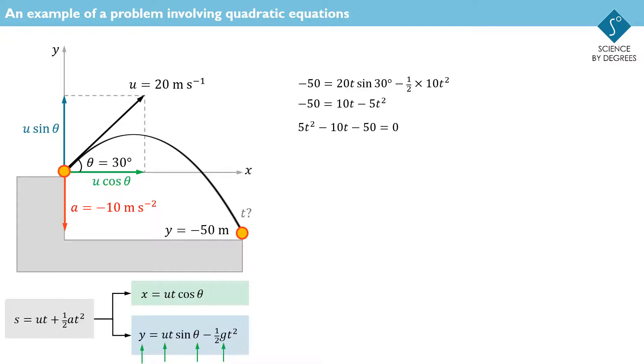We can collect all the terms on the same side, and then divide throughout by 5 to give us this quadratic equation to solve. It's a specific example of the general quadratic equation shown here in grey, where a, b and c are the coefficients of the terms in the equation. Its solution can be found using the quadratic formula.